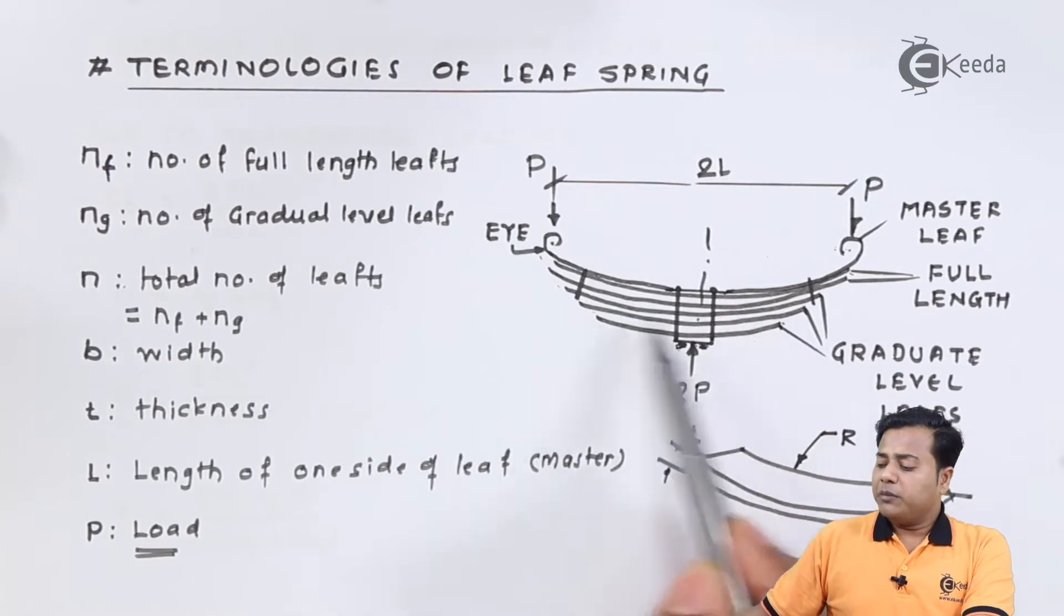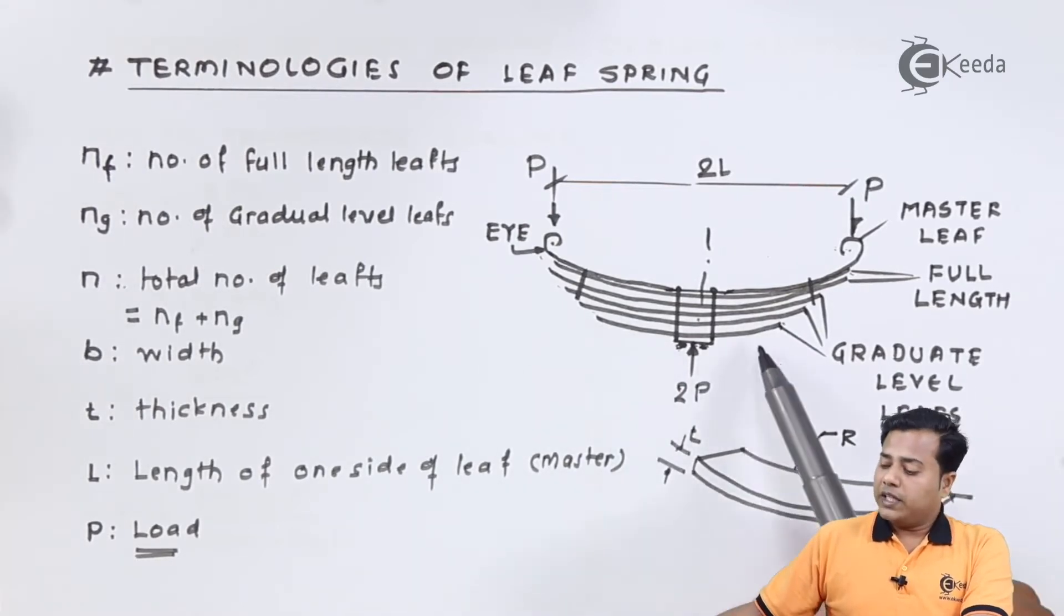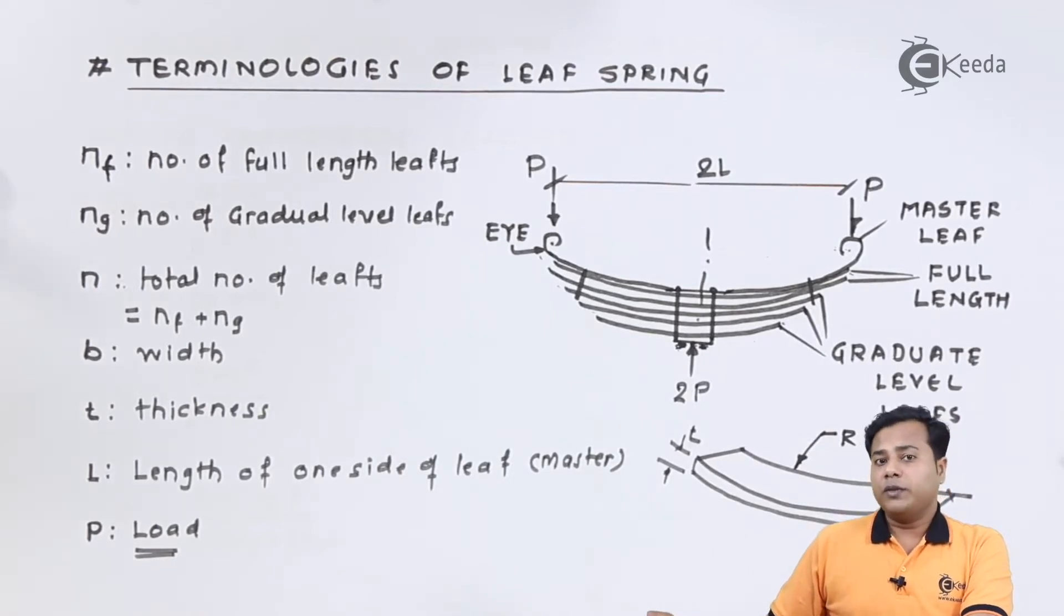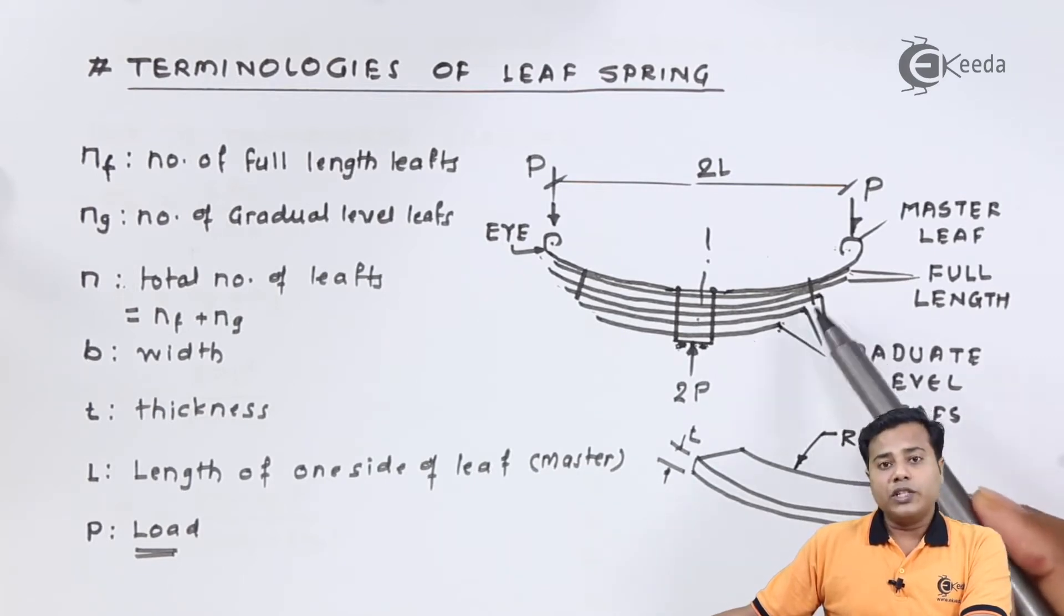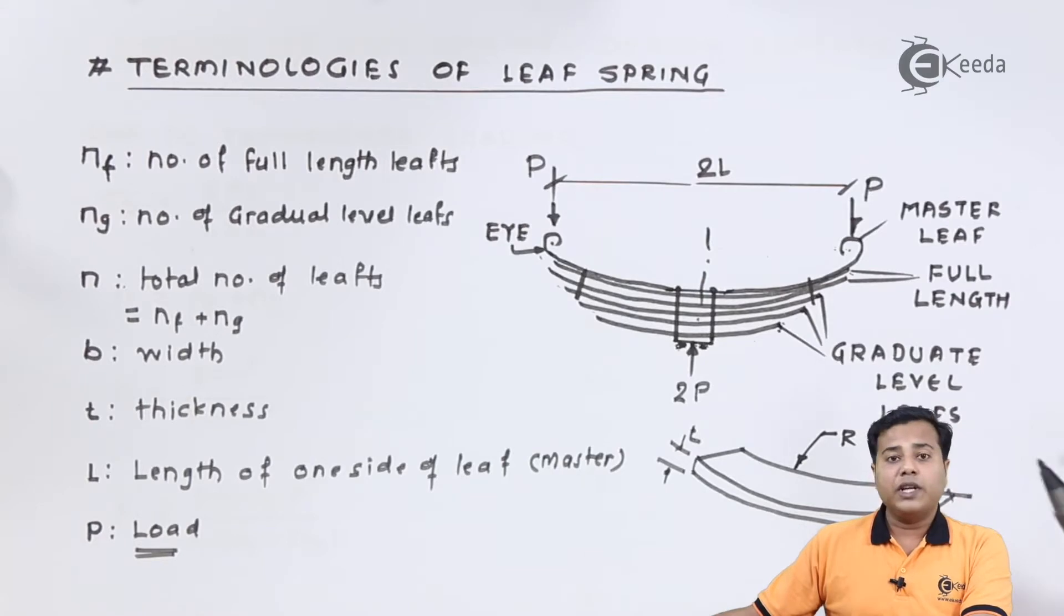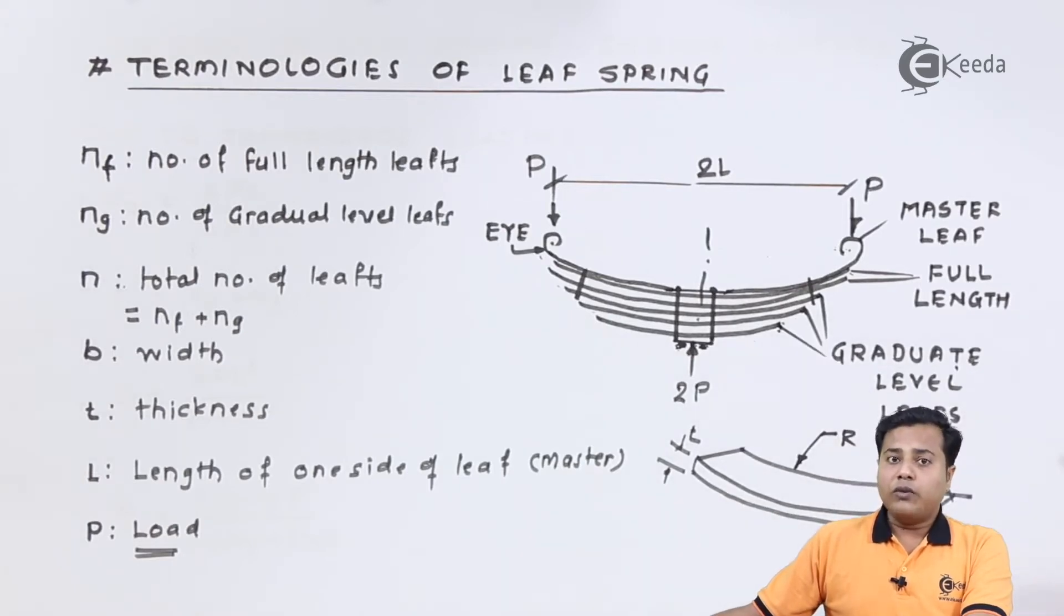Leaf springs are made up of different plates of certain thickness and certain width, of which there are different sections and different divisions. For example, the length of the springs or the leaves are going to change or are changing gradually, and that's why they are called graduate level leaves or graduated leaves. The number can vary from 3 to 12 also, but it depends upon the given application.